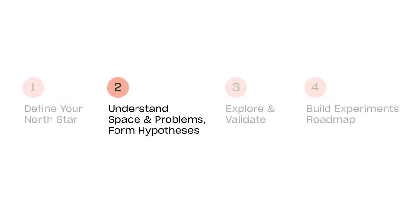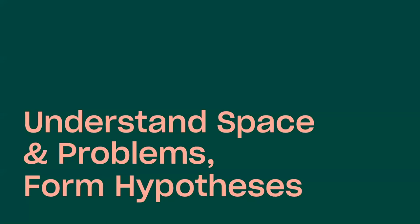This leads us to number two. We understood what a North Star is and how to measure it. Now I want to talk about the ambiguity you might find at the beginning of a project — very common in growth projects — and how to understand the space, the problems, and form some solid hypotheses.